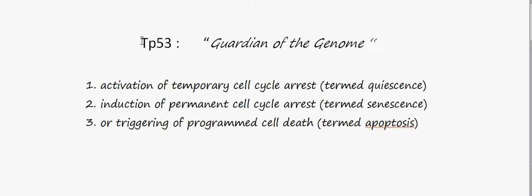Today we will be discussing the p53 gene, which is also called the TP53 gene. It has several other names: tumor protein p53, cellular tumor antigen p53, and tumor suppressor p53. It is generally called the guardian of the genome, as it prevents neoplastic transformation — that is, it prevents normal cells from progressing to malignancy.